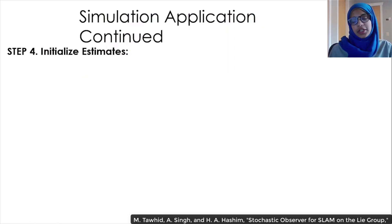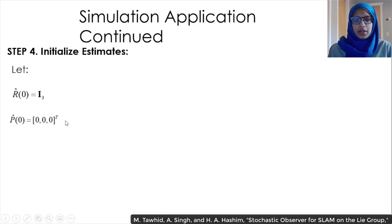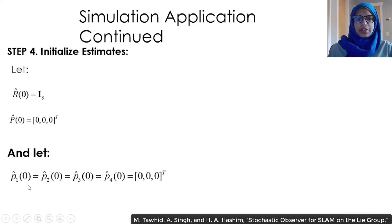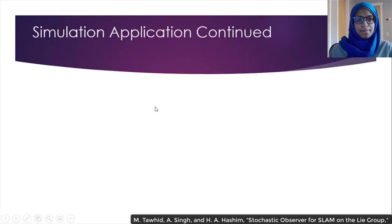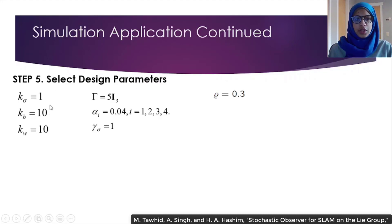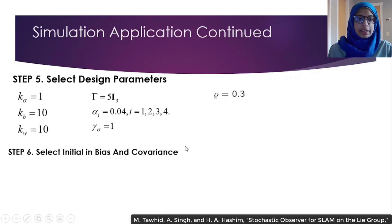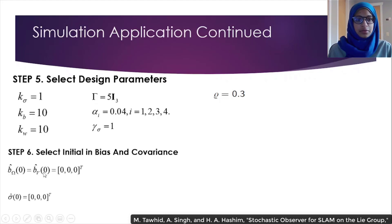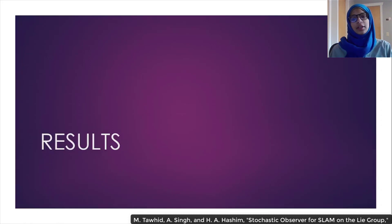Step four of the approach is to initialize the estimates. We consider r hat to be equal to the identity matrix and p hat to start at the origin, or zeros. We then let all four feature positions start at zero, so p1 hat equals p2 hat all the way to p4 hat. Step five of the approach is to select design parameters, which can be observed on the screen. Step six of the approach is to select the initials for the bias and the covariance; for our case, we've chosen all to equal zero, so b hat omega equals b hat v equals sigma hat. With that, all the variables are accounted for and defined.